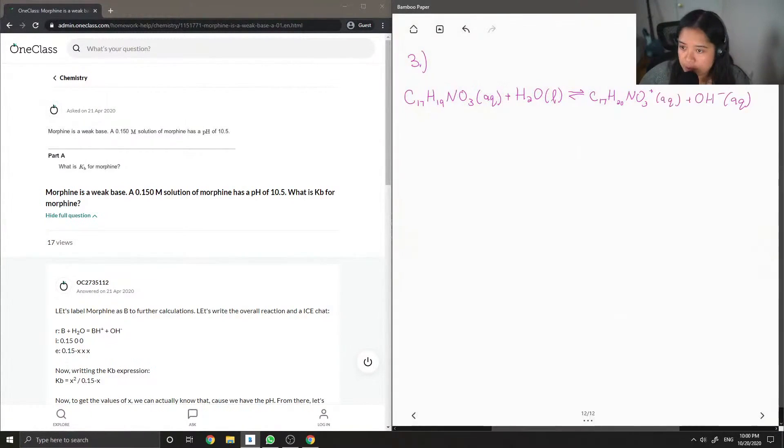So I have morphine right here, then it reacts with water. The morphine can get protonated. So in this case, since morphine was the proton acceptor, it is the base.